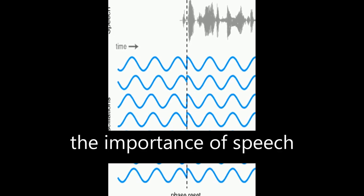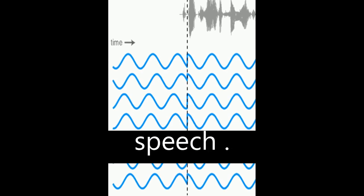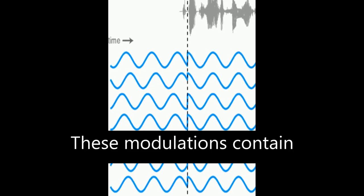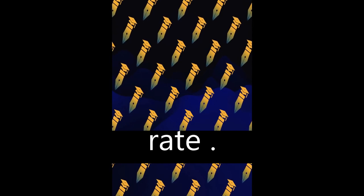The article discusses the importance of speech rhythm and how it is conveyed through amplitude modulations in speech. These modulations contain important markers for place and manner of articulation, segmental information, and speech rate.